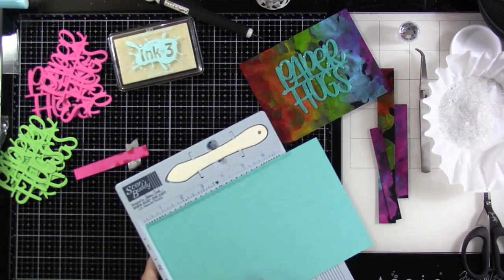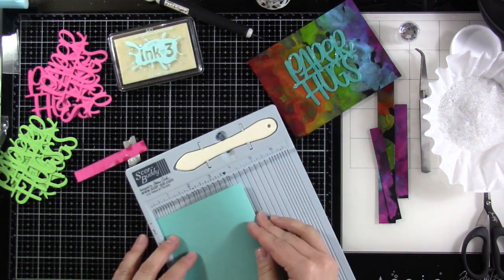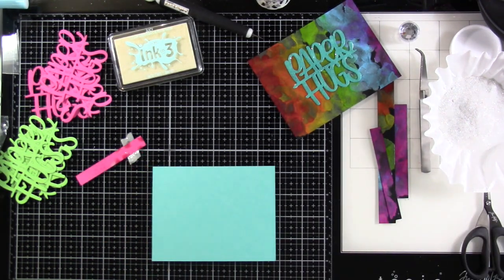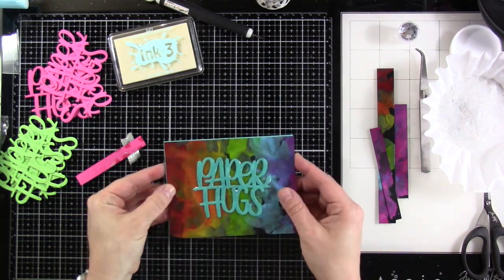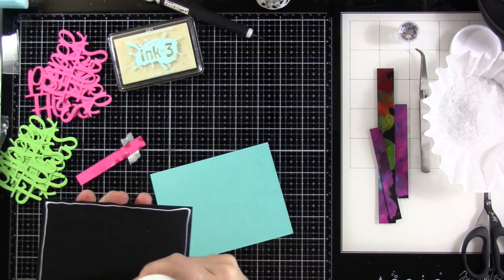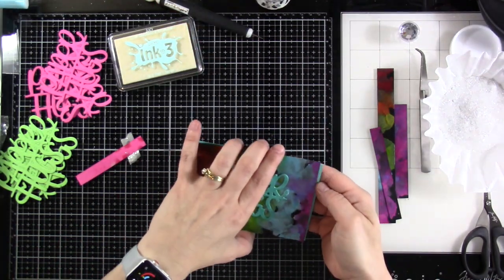I'll adhere that down. And then my card base, I'm going to match the cardstock from the card or, you know, from each of the paper hugs. So I'll have this blue, I have some pink and some green, and then I'll attach that down. It is going to cover the whole front of that. And that cardstock was cut down to five and a half inches by eight and a half inches and scored at four and a quarter. It will be a top folding A2 size card.